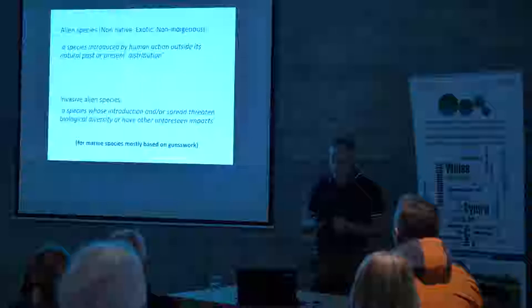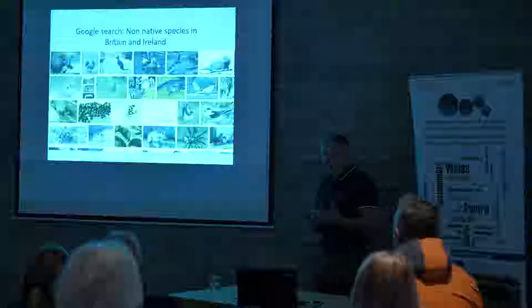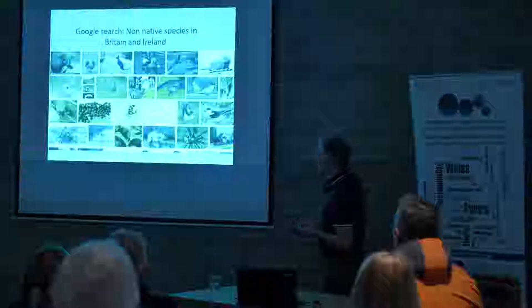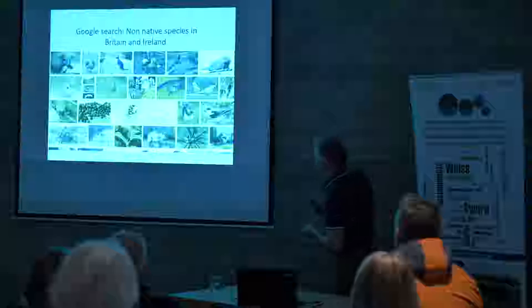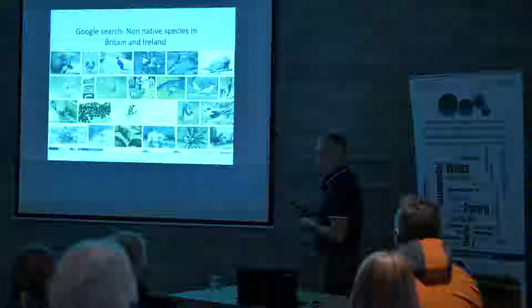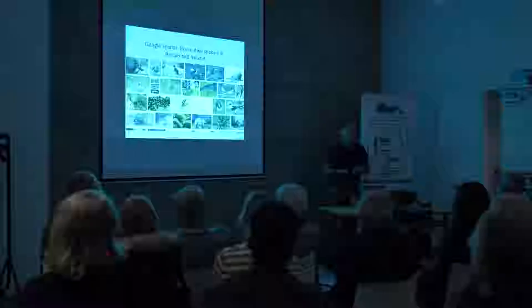If we do a Google search for non-native species in Britain and Ireland and click on images, we'll get mink, rabbit, parakeet, even wallabies — lots of very obvious terrestrial species, some birds, and maybe some barnacles and a crab. Essentially, if we're not marine-specific, when we think of non-native species we think terrestrial. We need to think about the marine environment specifically and ask: how many non-native species occur around Britain and Ireland? Is it one, ten, a hundred, a thousand?